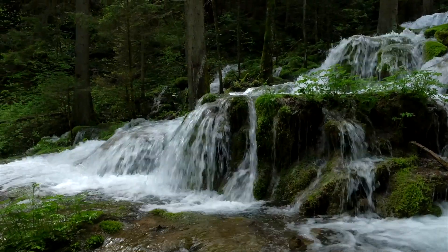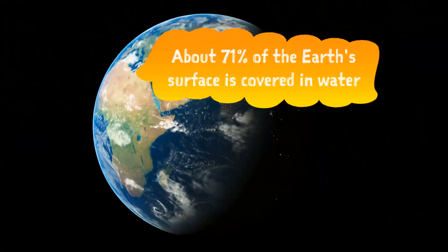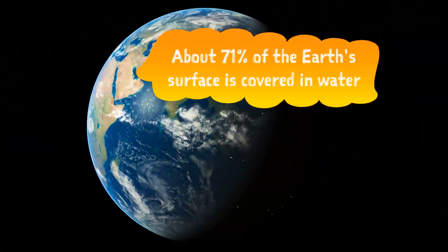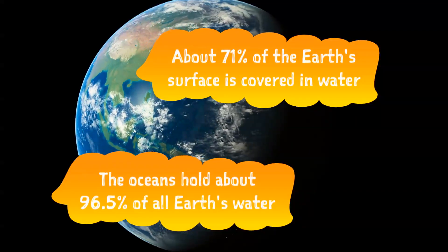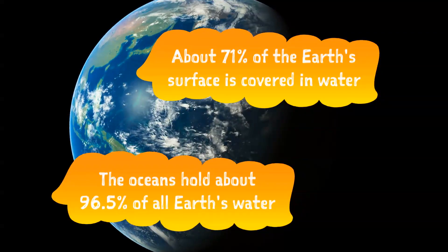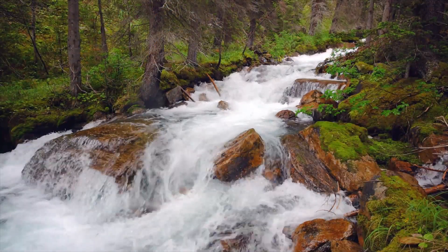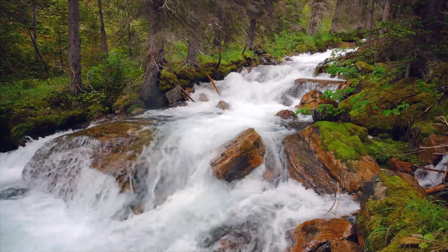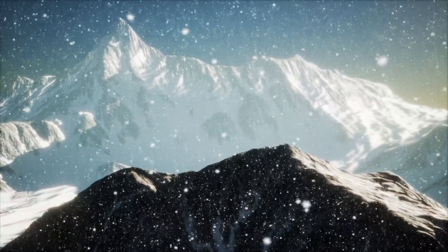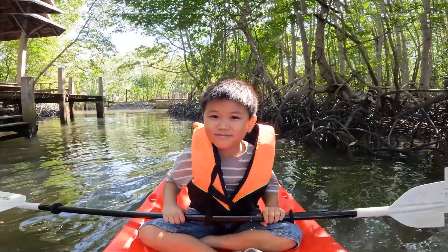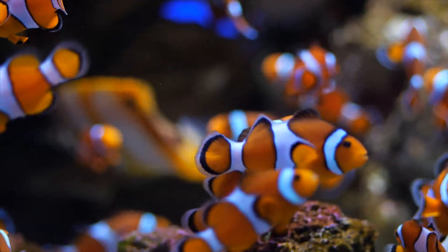Have you ever wondered where water comes from? About 71% of the Earth's surface is covered in water and the oceans hold about 96.5% of all Earth's water. Water also exists in the air, in rivers and lakes, in ice caps and glaciers, and underground amongst other places. Water is important to life including plants, animals, and humans.